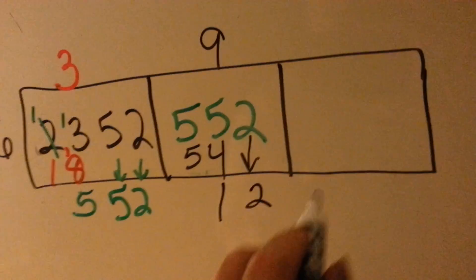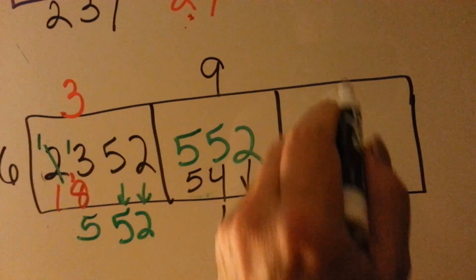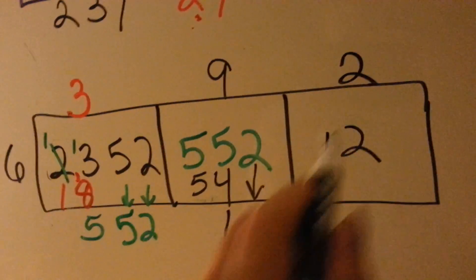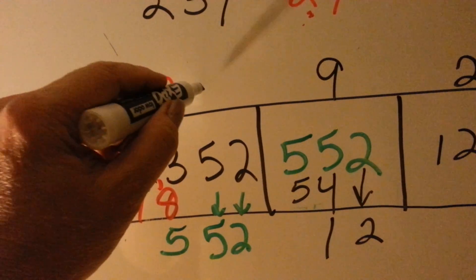And now it's the 12's turn to go into this box. And can 6 fit into 12? Yes, it can. 2 times. And now all these places to the right of the number become 0s.